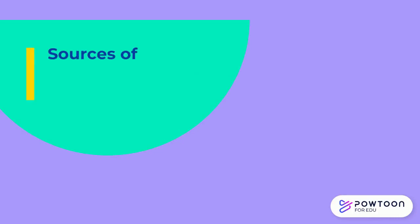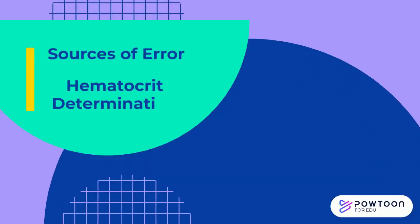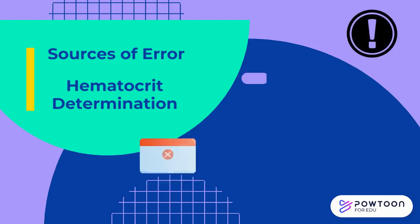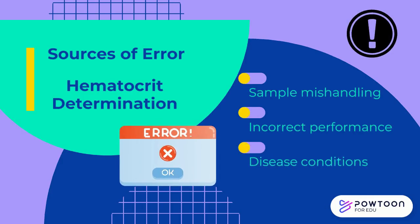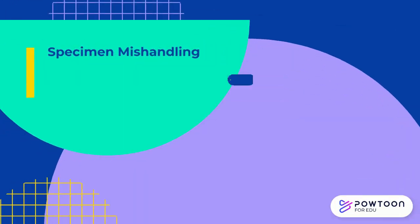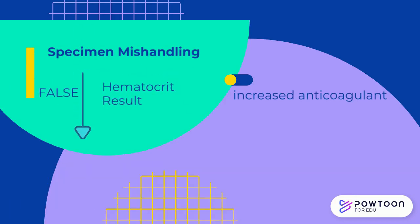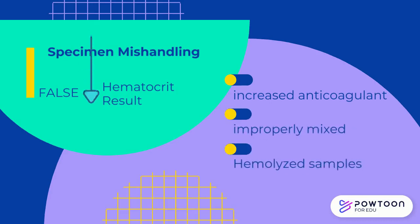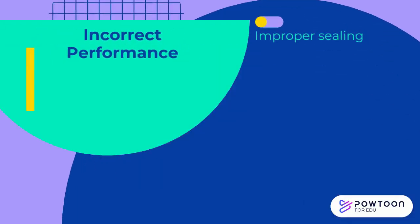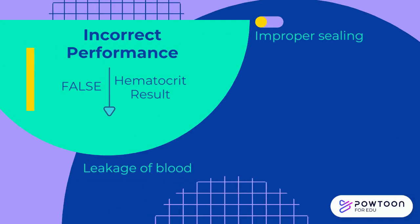The different sources of error for both macro and micro hematocrit methods are caused by sample mishandling, incorrect performance, or disease conditions. An increased concentration of anticoagulant, which usually occurs during a short draw, decreases the hematocrit reading due to RBC shrinkage. A decreased or increased result may occur if the specimen was not mixed properly. Hemolyzed samples give a decreased result because red blood cells have already been destroyed before packing. Improper sealing of the capillary tube causes a decreased hematocrit reading due to leakage of blood during centrifugation.